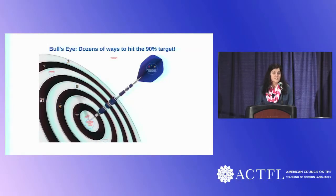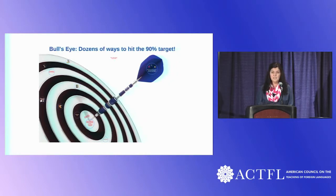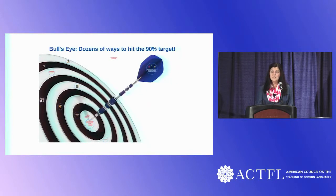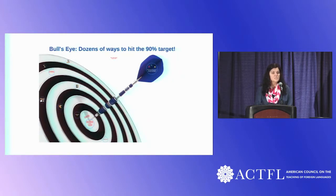We're talking about this bullseye, and the bullseye is 90% target language in our classrooms. It's difficult to imagine as a teacher using 90% target language sometimes, but it's also difficult to imagine how we get our students thinking and using 90% target language all the time. I hope today we'll go through some ideas — how can I get myself and my students really using target language in a meaningful way to hit this proficiency goal?